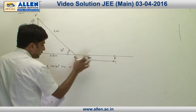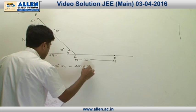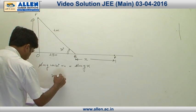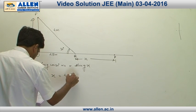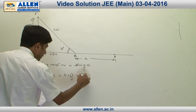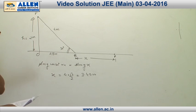From here we get the value of x. The value of x is 4 cos 30, that is 4 into root 3 by 2, which comes to be 3.45 meters.